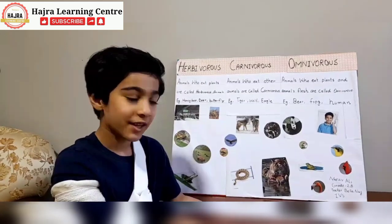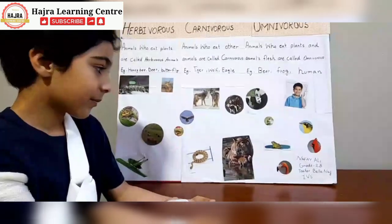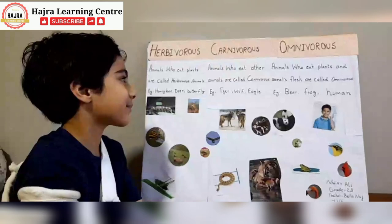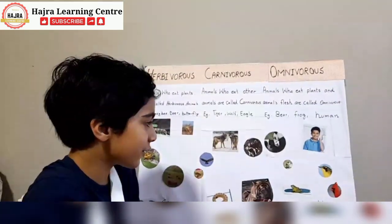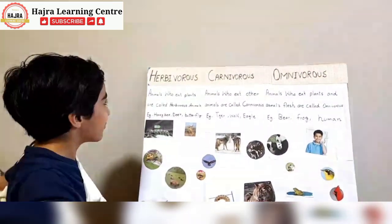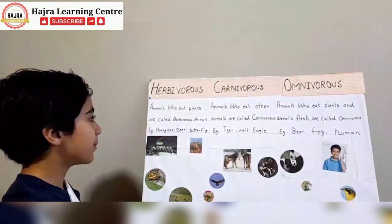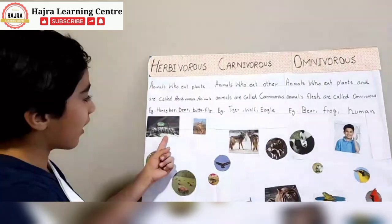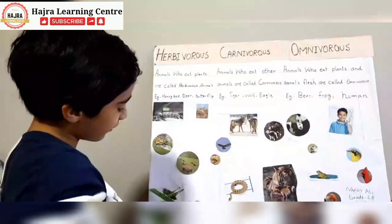Assalamu alaikum, friends. My name is Nafim Mohamad Dali. My teacher is named Bella Nas. I'm in IBS. I will teach you three types of different animals: herbivores, carnivores, omnivores. Herbivores are animals who eat plants. For example, deer, butterfly, honeybee, cows, grasshoppers.